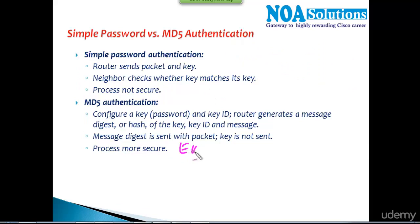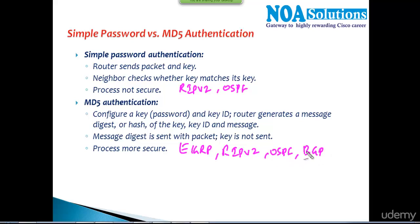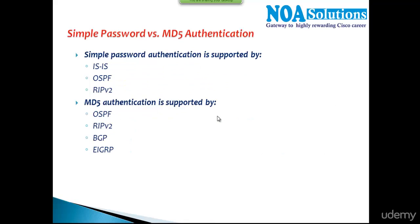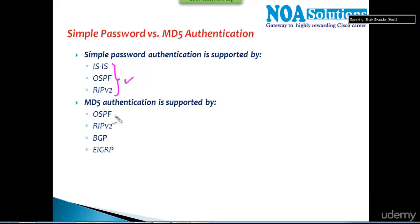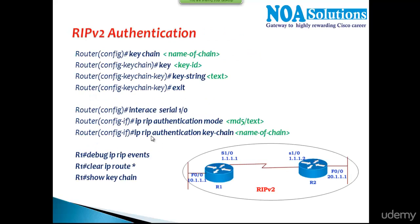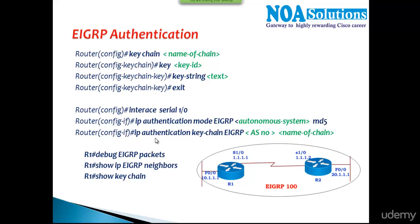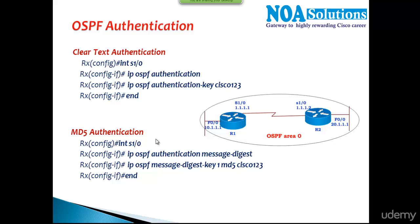Some protocols like EIGRP support only MD5 authentication. RIP version 2 supports both simple authentication and MD5. OSPF also supports both. BGP supports only MD5. So EIGRP and BGP support only MD5, while OSPF and RIP version 2 support both. In our next videos we'll see how to implement RIP authentication, EIGRP authentication, and OSPF authentication with practicals.